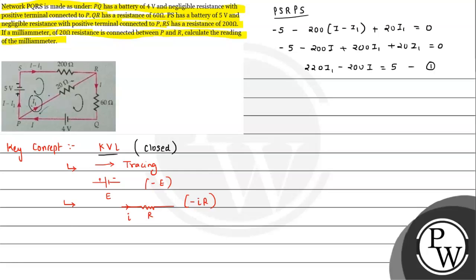Now we take the second loop as loop PRQP.